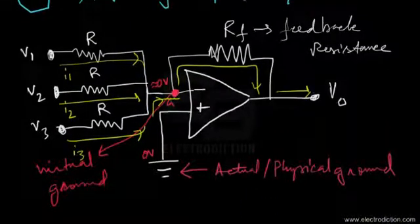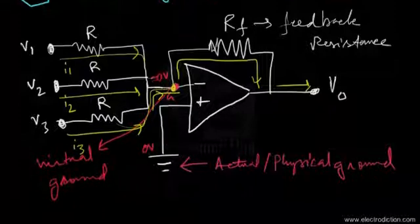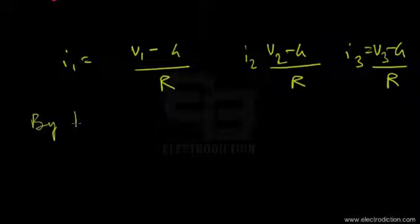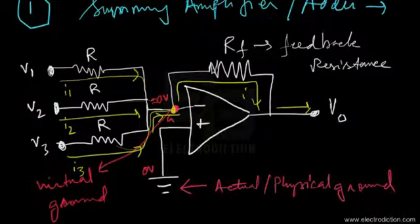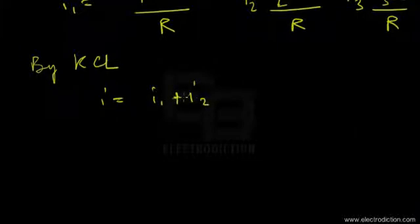Looking at the circuit again, all currents I1, I2, and I3 meet at the common node. By KCL, currents meeting at a common node add up, so the net current flowing through the feedback path, I, is equal to I1 + I2 + I3.